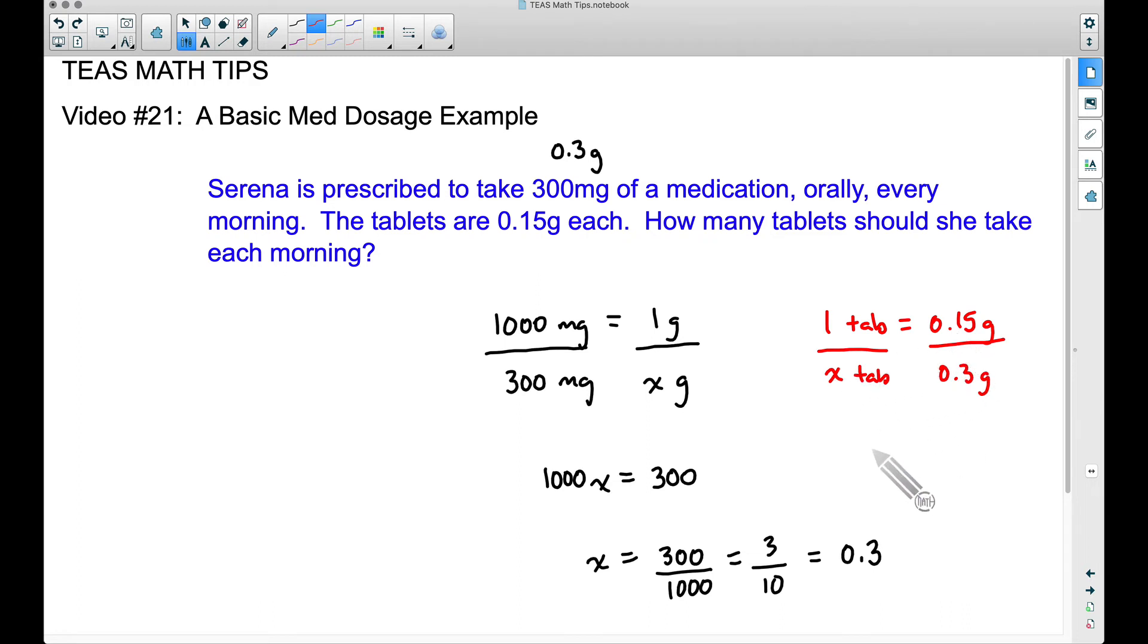X times 0.15, that's 0.15X. This is going to be equal to 0.3 times one, which is 0.3 and dividing both sides by 0.15. Very similar to what I did over here. I'll just go ahead and show that step. We're dividing by 0.15 on both sides. We're trying to get X by itself and therefore X will be equal to, tell you what, that is an ugly five right there. Let me go ahead and fix that. But 0.3 divided by 0.15, this will be two.